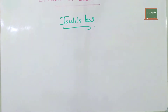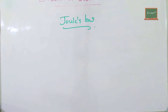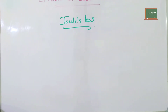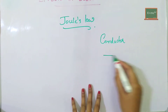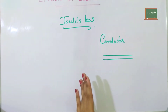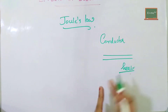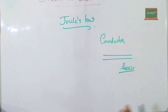Now, we will start with Joule's law. When we start with Joule's law, we will start with the current. We will start with a conductor. What is the conductor? The conductor carries current. In a conductor, the current is passed. That conductor gets heated. The heat is developed, and that effect is called the heating effect of the current.